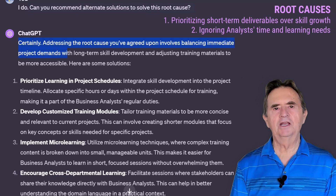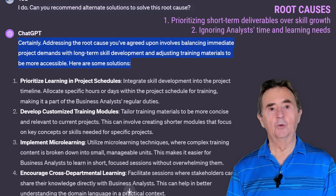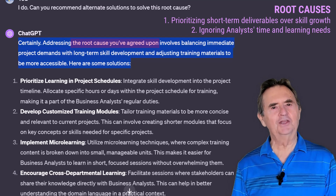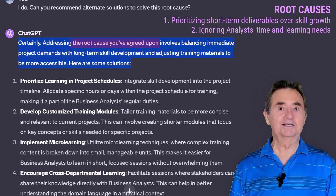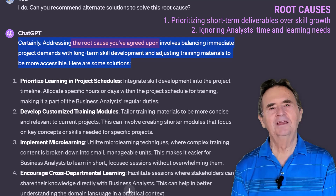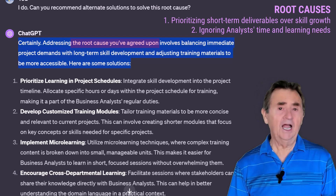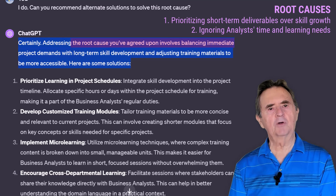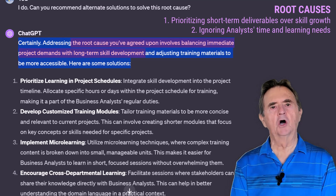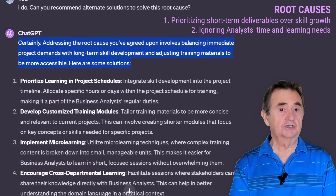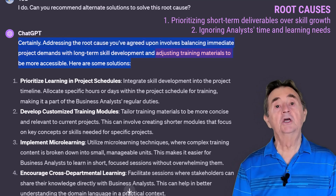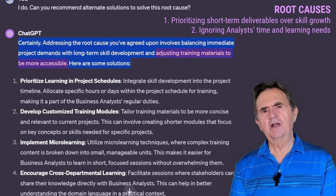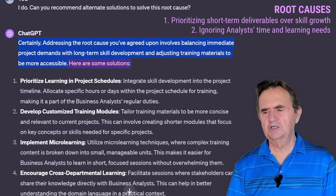Note how ChatGPT incorporates the disclaimer 'the root cause you've agreed upon' in this response — that sounds very human, kind of like a typical CYA statement. In all seriousness, I do agree that the root cause involves balancing immediate project demands with long-term skill development and adjusting training materials to be more accessible. Since that's pretty generic, it offers several concrete suggestions.